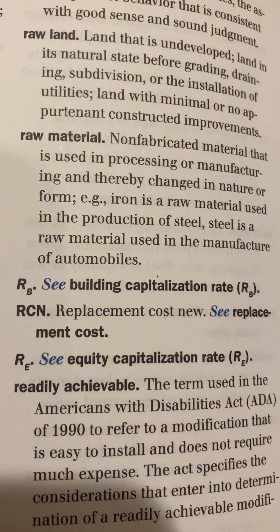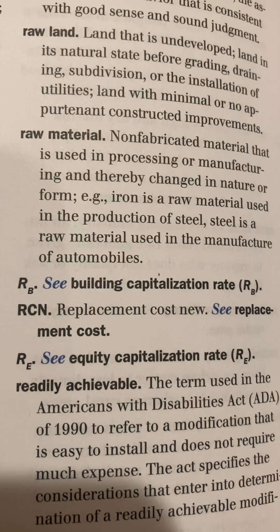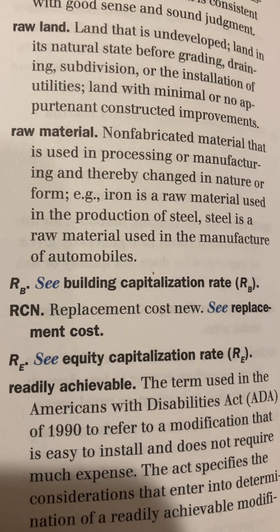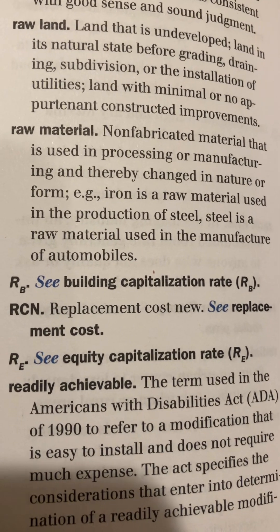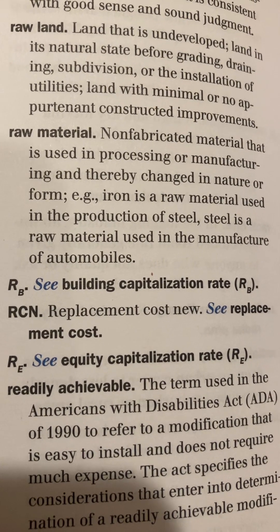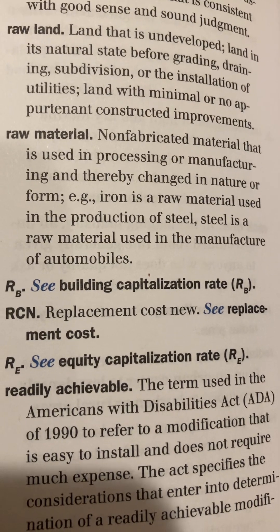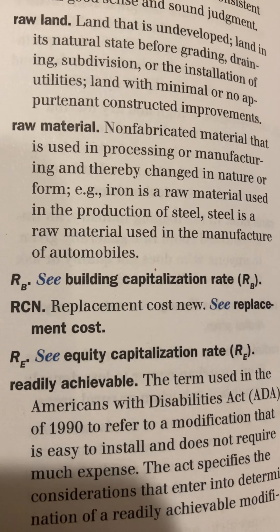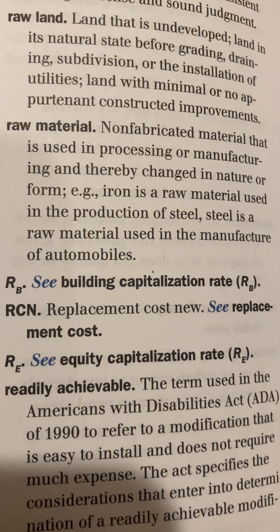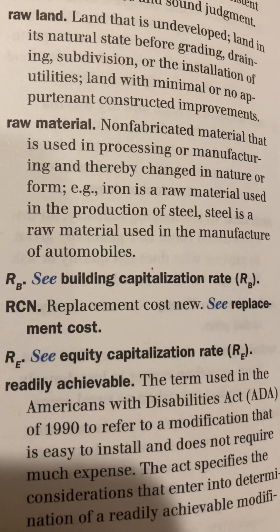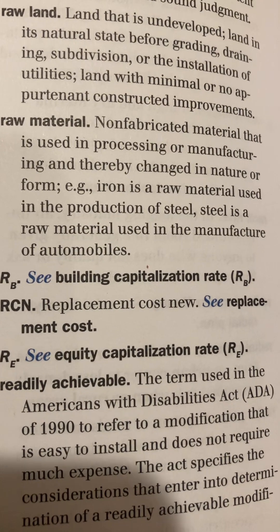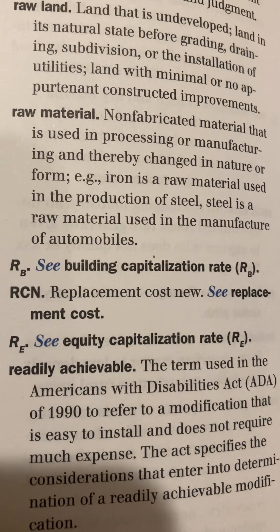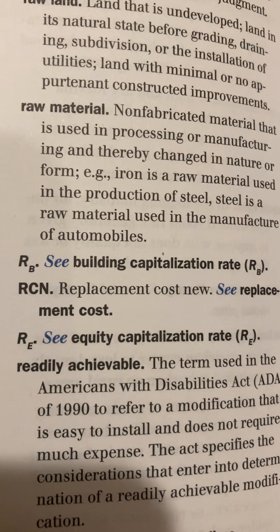Raw Material: Non-fabricated material that is used in processing or manufacturing and thereby changed in nature or form. For instance, iron is a raw material used in the production of steel. Steel is a raw material used in the manufacture of automobiles.